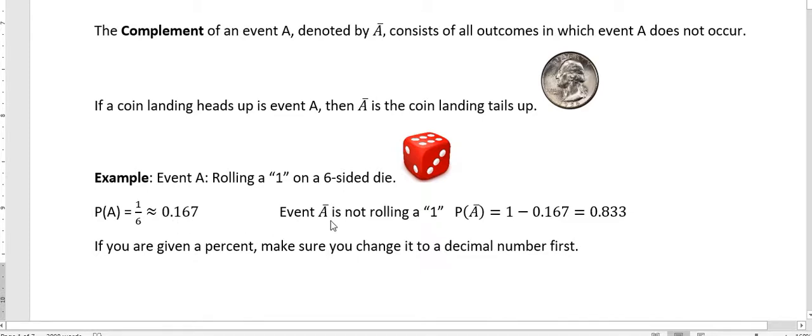So the event, the complement of A is not rolling a one. And so we could get that a few different ways. One way we could do it then is just say, well, if rolling an A is 1 sixth, if I take one and subtract the probability of getting a one, what's left is a probability of not getting a one.